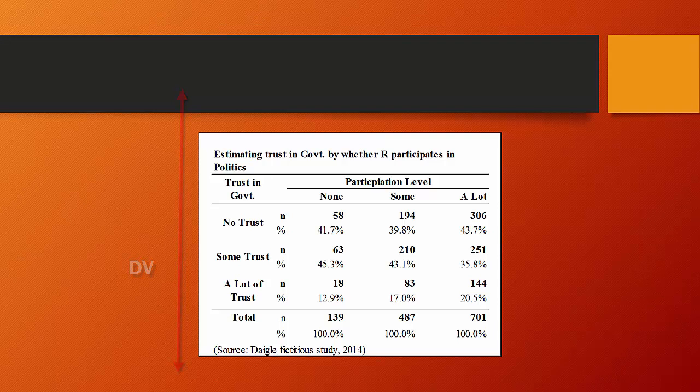When we sum a cross tab, we always sum down the columns. Columns should always sum to 100%. And we're looking for the differences in the value of the dependent variable across the categories of the independent variable.